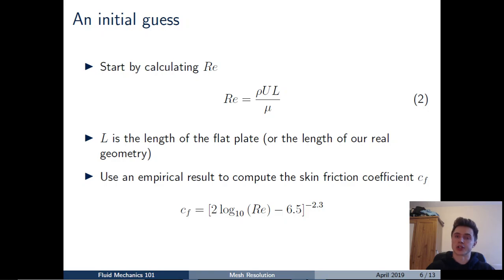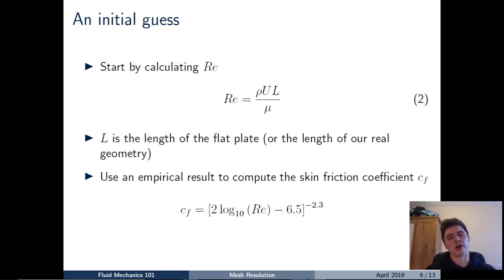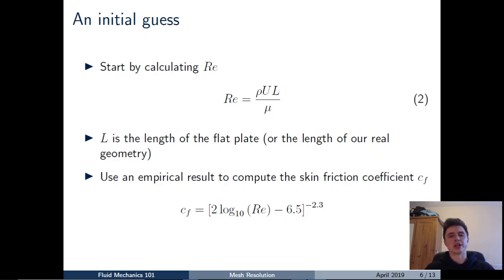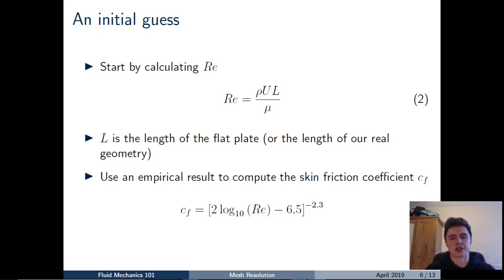The first step is to calculate the Reynolds number for your flow: Re = rho × U × L / mu, where U is the free-stream or characteristic velocity and L is a characteristic length scale. For a real flat plate, L would be the plate length, but here we take a characteristic length of our actual geometry — for example, the chord length of an aerofoil. For more complex geometries, estimate the effective length.